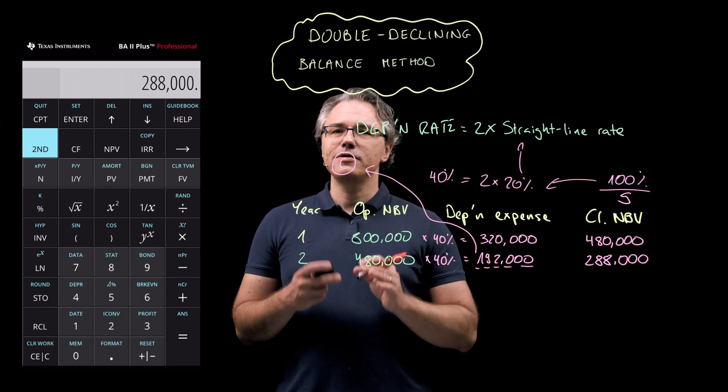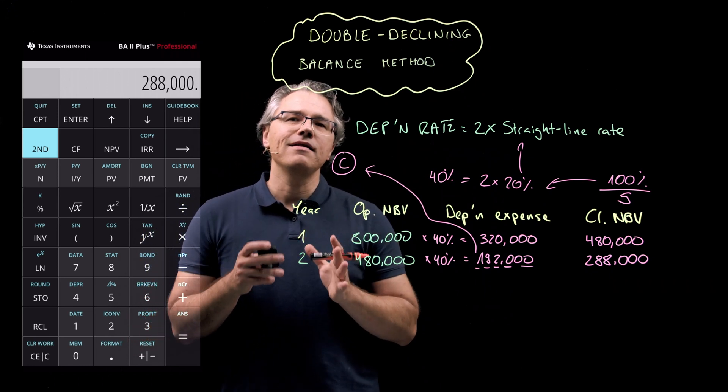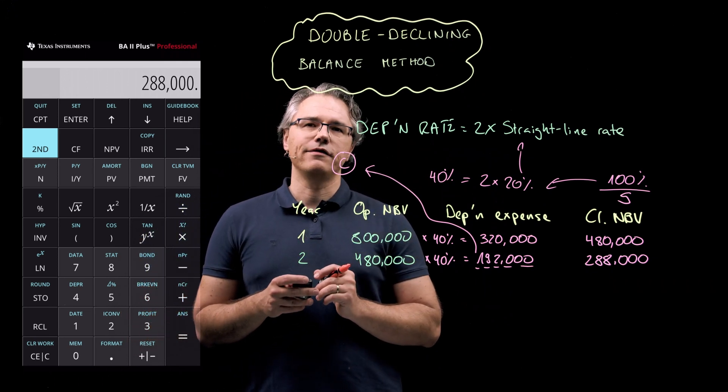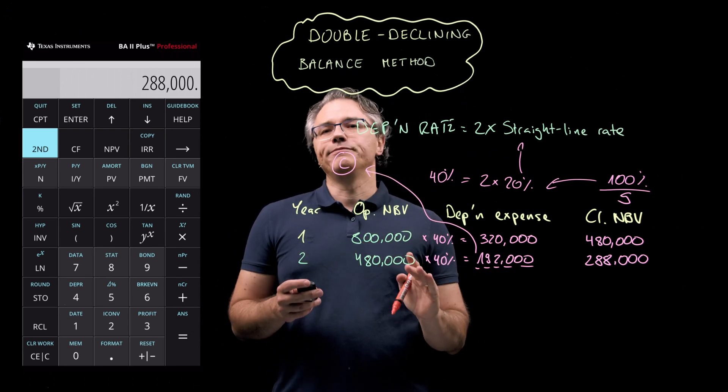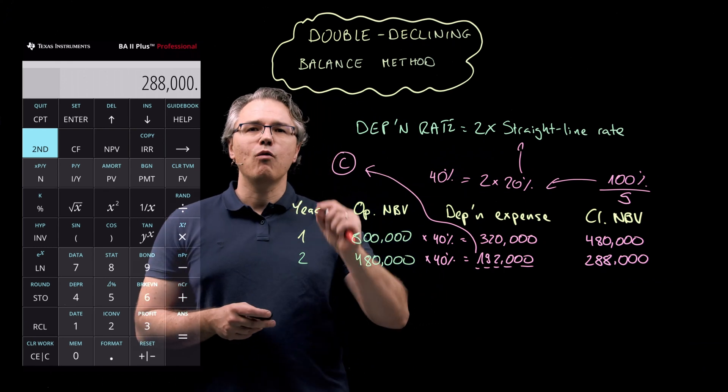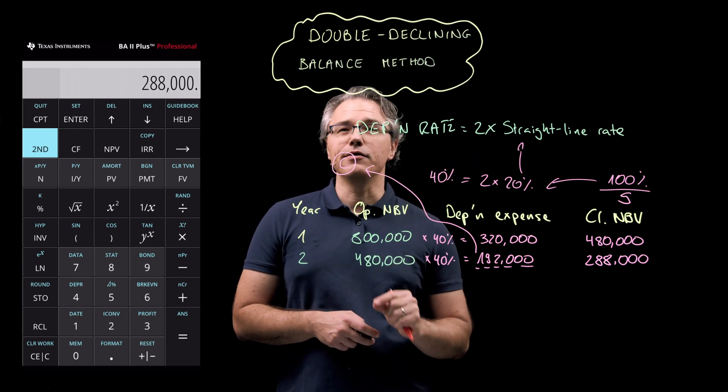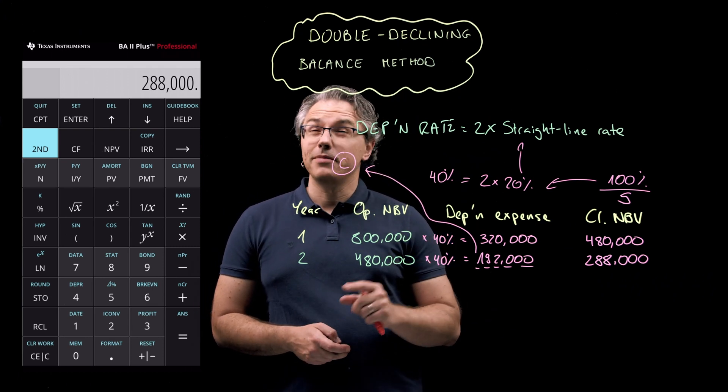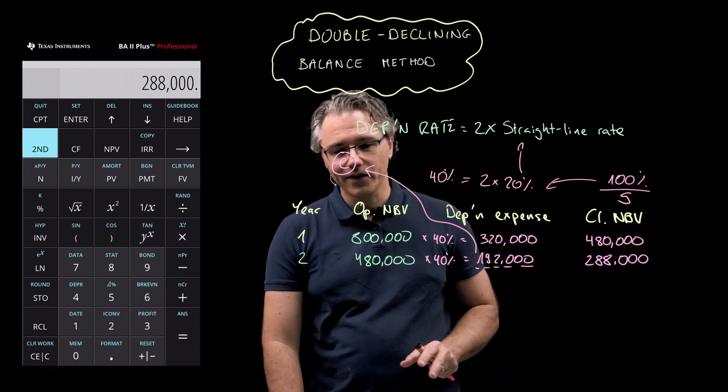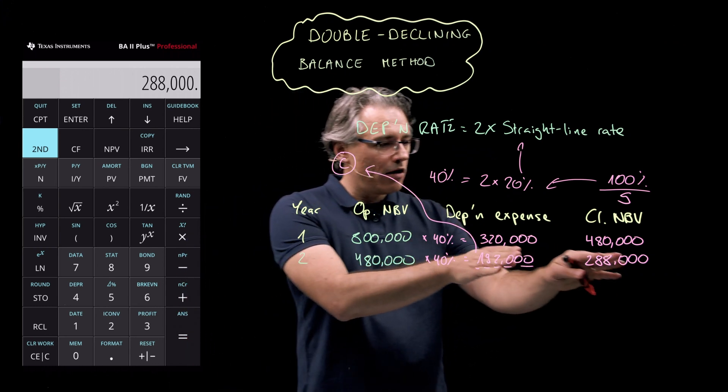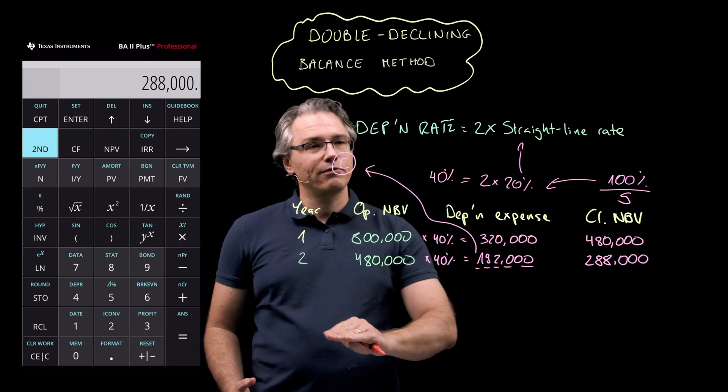However, there is one potential use for this number, and it's in relation to what happens in the final year of the asset's life. When you compute the depreciation expense for that final year, you should make it whatever number gets you to a closing NBV that is equal to the estimated residual value. Let me show you what I mean by just carrying this example beyond what was required by the question.